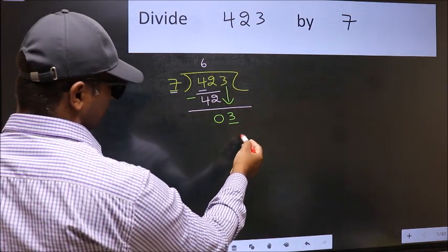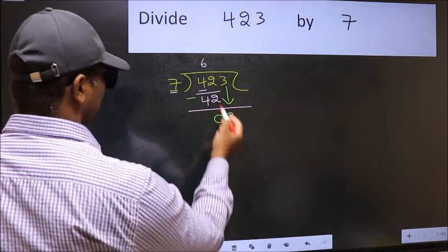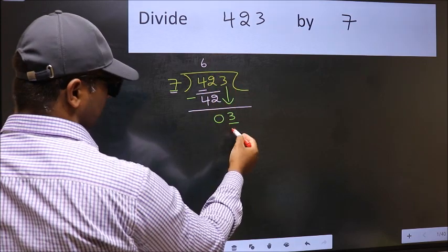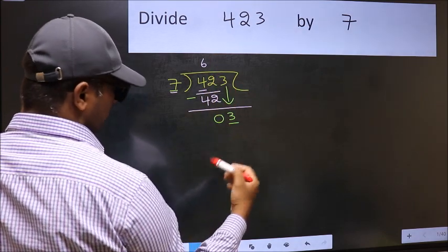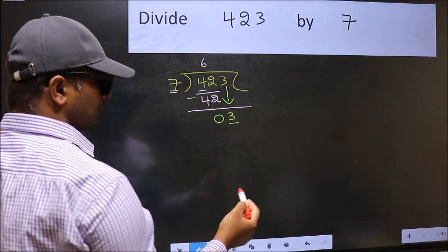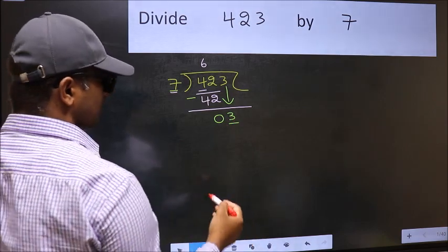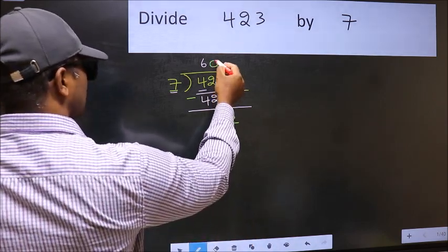What number should we take here? If I write 1, we will get 7, but 7 is larger than 3. So what we should do is, we should take 0.